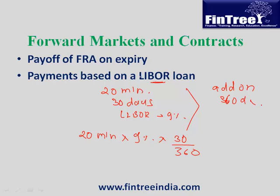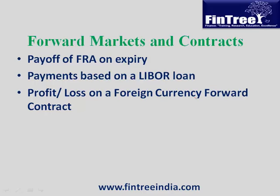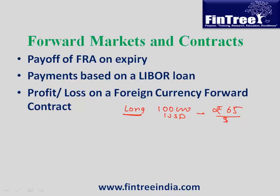Next: profit or loss on a foreign currency forward contract. Let us say we have entered into the long side of a contract with a notional amount of 100,000 US dollars, and the contract rate was 65 rupees per dollar for a period of three months. After three months, the spot rate turned out to be 67 rupees per dollar. We need to decide whether we profited or made a loss, and by how much.